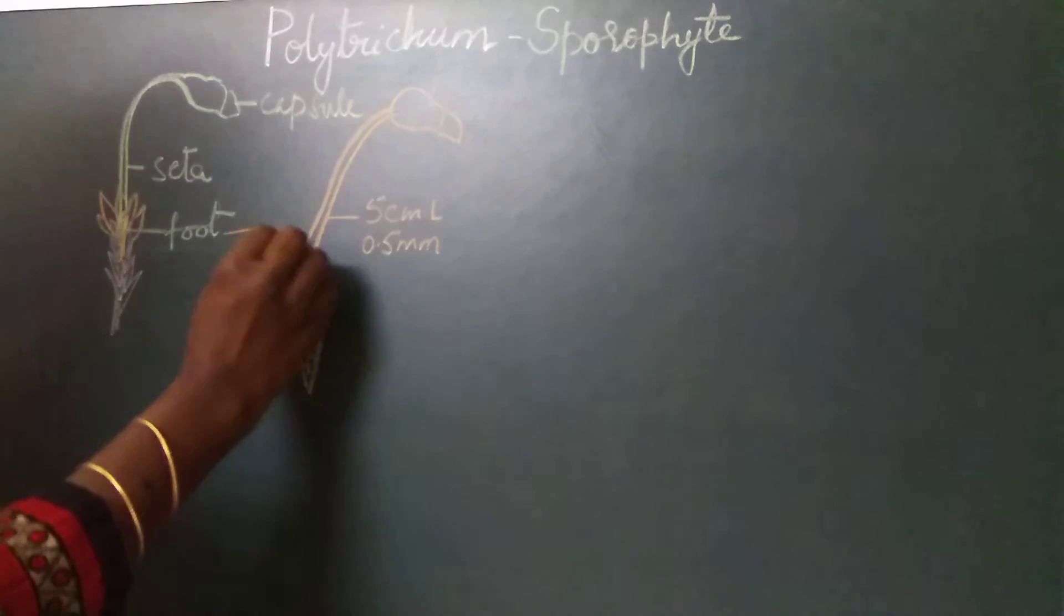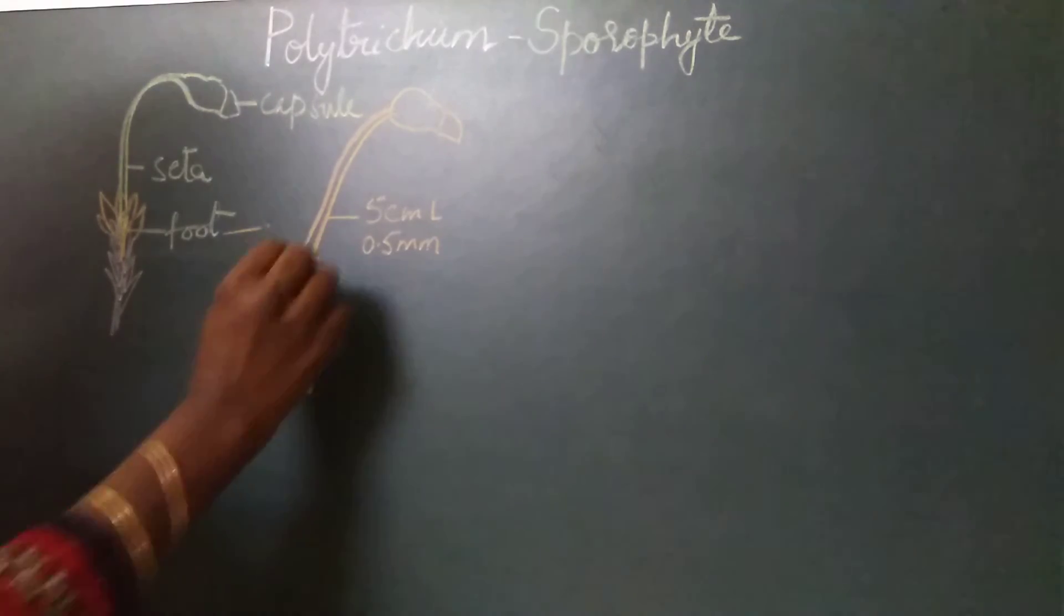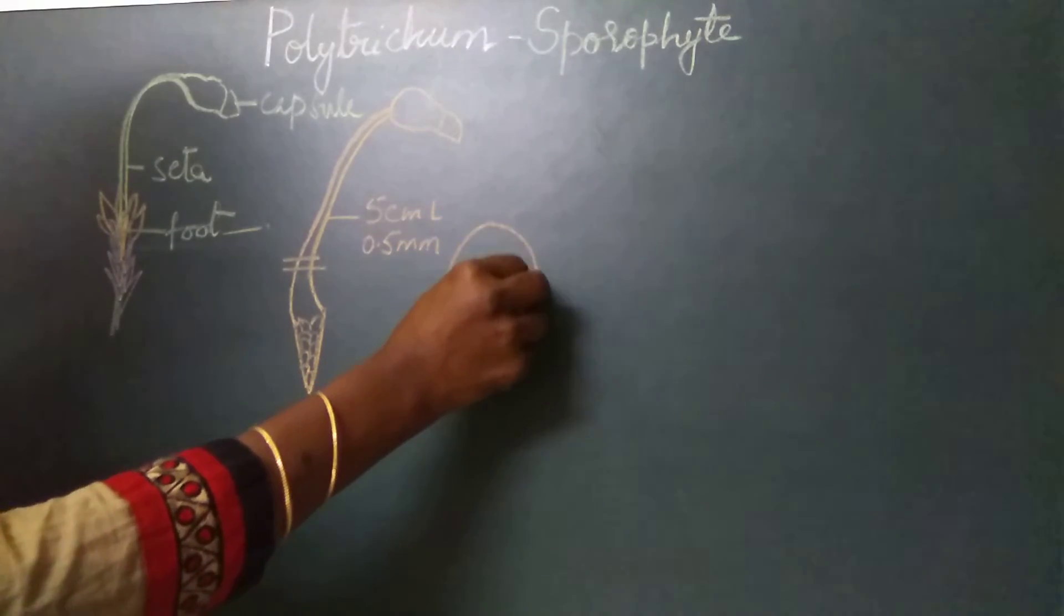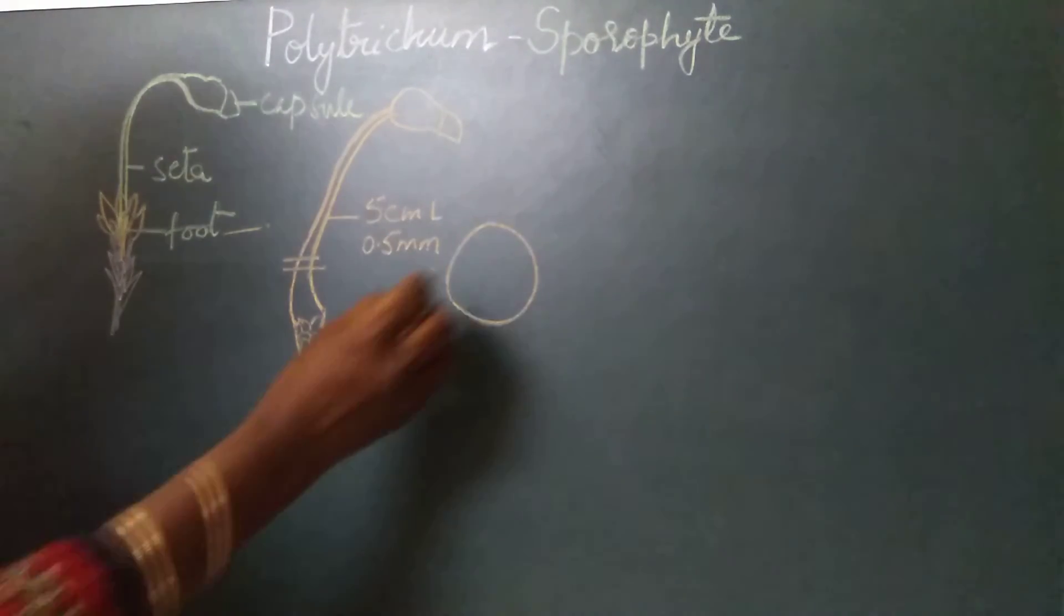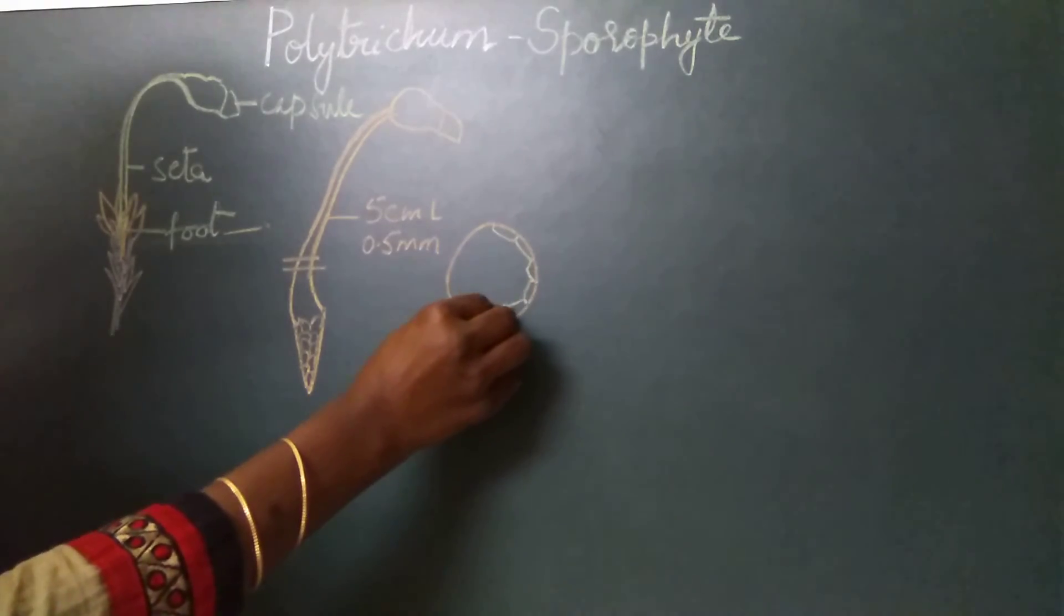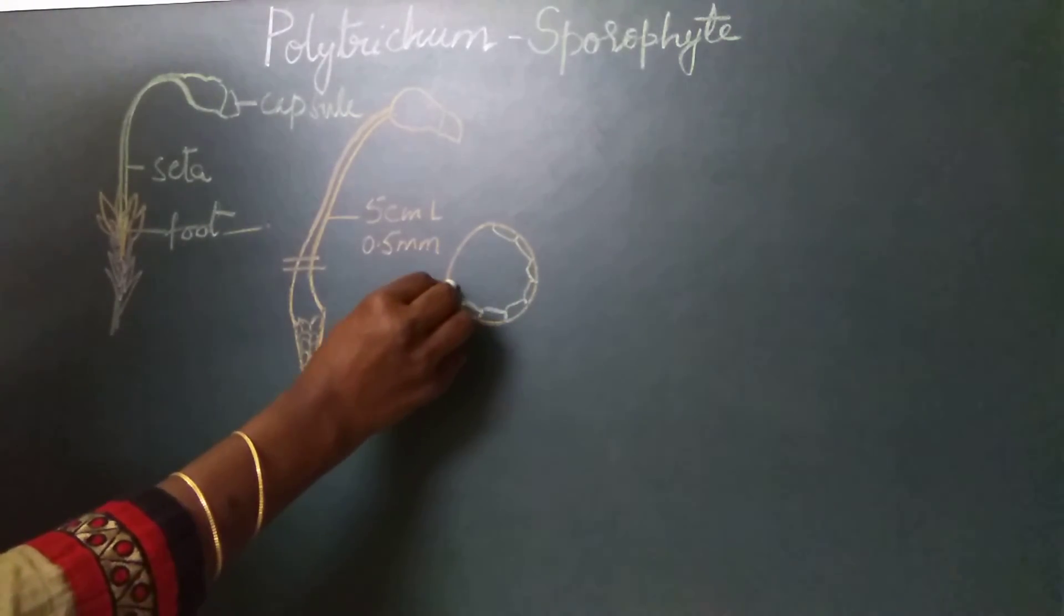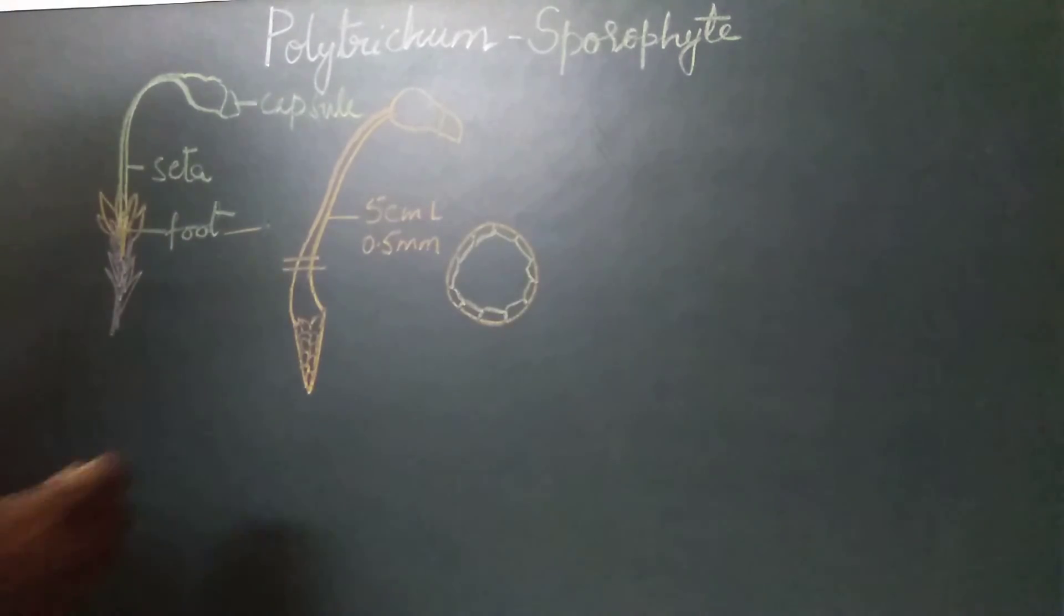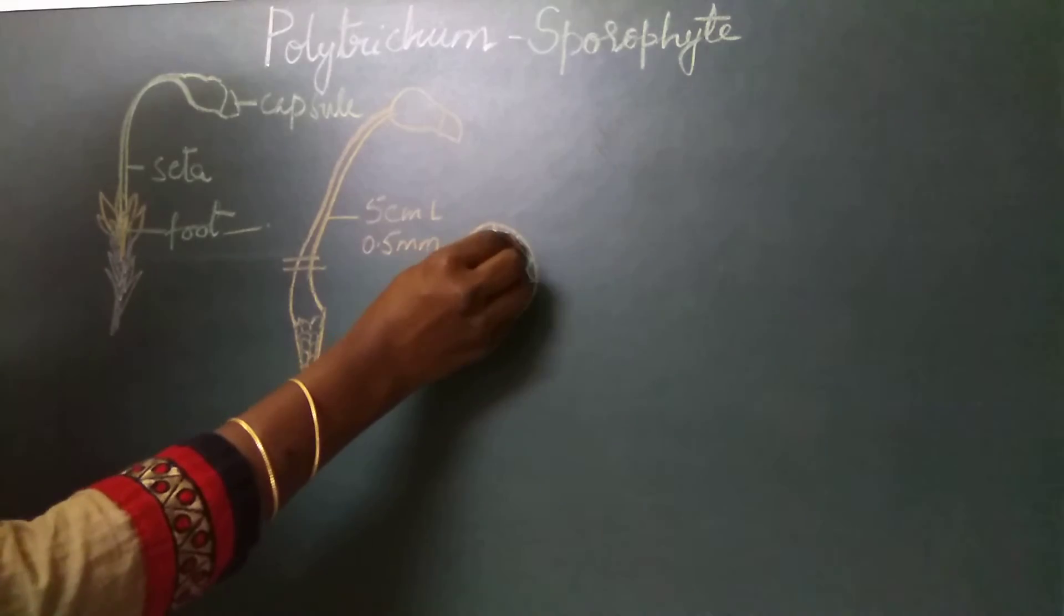When we look at the transverse section of the seta, we find the seta has an outer epidermis. The epidermis is followed by hypodermis, which is made up of sclerenchymatous cells.